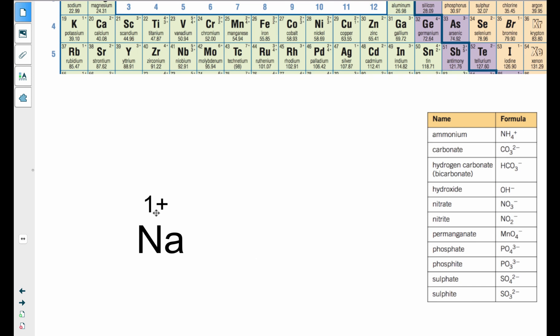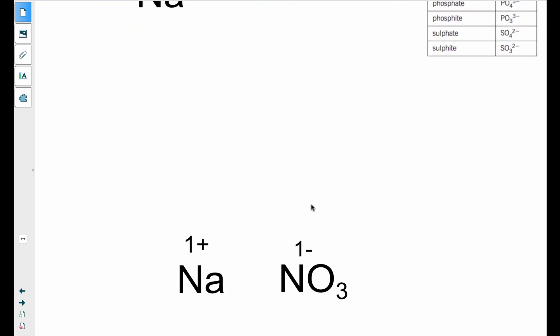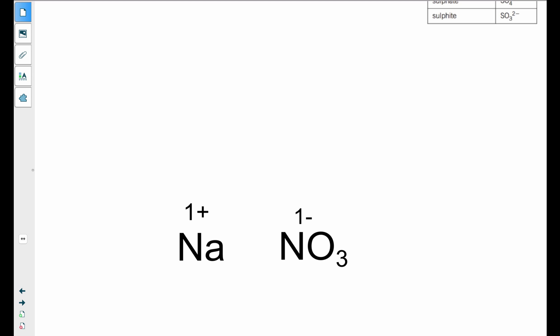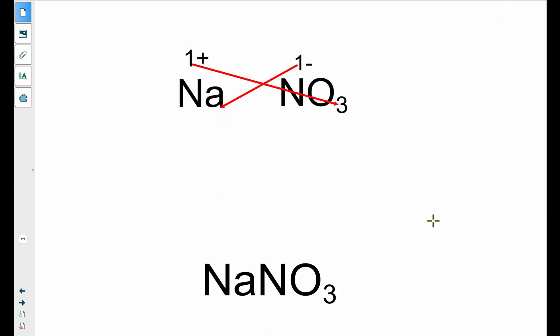So I've got my sodium, which is a 1 plus. I'm going to have my nitrate, which is NO3 with a 1 minus. And here we are. And crisscross, I will need one sodium for each one nitrate. So this is a one-to-one ratio. So we will have NaNO3.